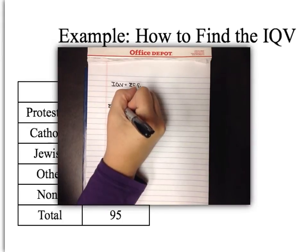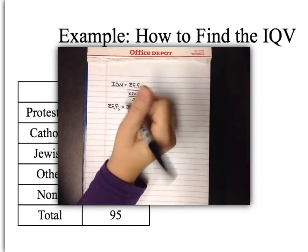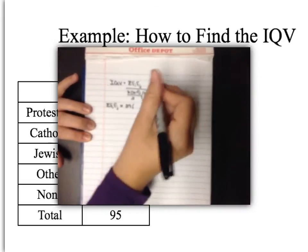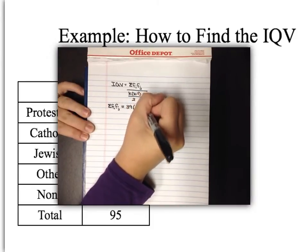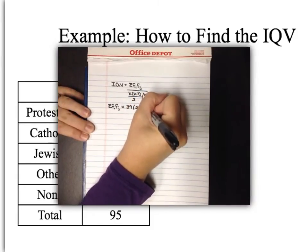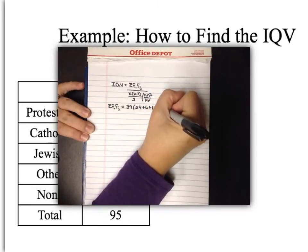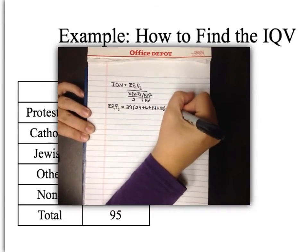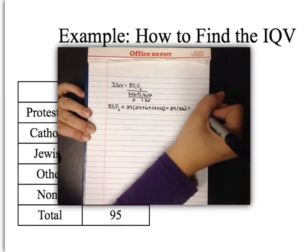For the first category, Protestant, we have a frequency of 39. We multiply that — f(i) = 39 — by f(j), the frequency of all the other categories: 24 for Catholics, plus 6 for Jewish, plus 14 for other, plus 12 for none. That gives us 39 times 56, which equals 2,184.